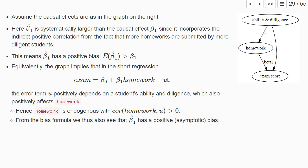Equivalently, we could think about this using the idea of endogeneity and thinking about the correlation between our explanatory variable, the number of submitted homeworks, and the error term in this short regression. So if we write the regression here, then the error term positively depends on ability and diligence, but that also affects positively the homework. So both the homework and the error term would have a positive correlation.